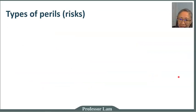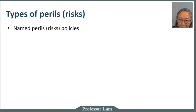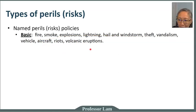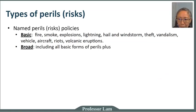Let's take a deeper look at the commonly named perils in insurance policies, particularly for homeowners insurance. If you have a named peril policy, there are two major types. The first is basic, which covers fire, smoke, and explosion. If any of these events happen and cause damages to your home or property, a named peril policy will cover them, but anything beyond that it won't.